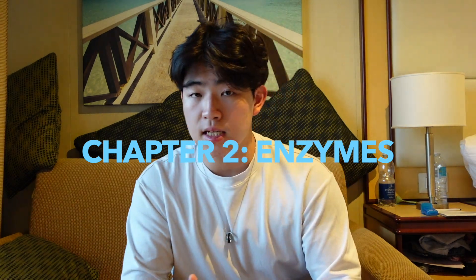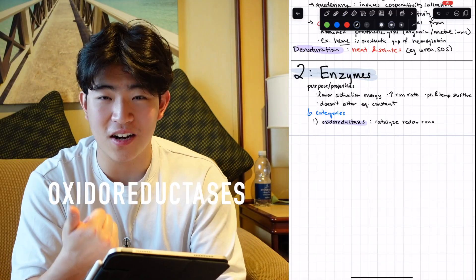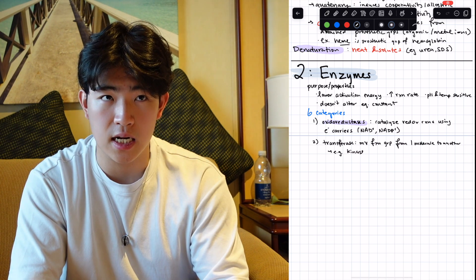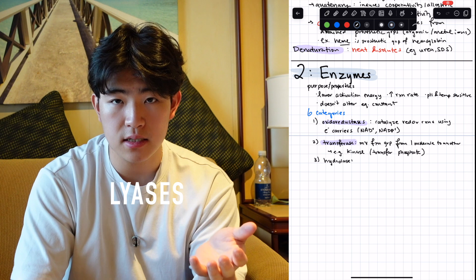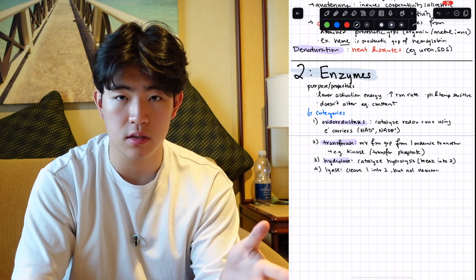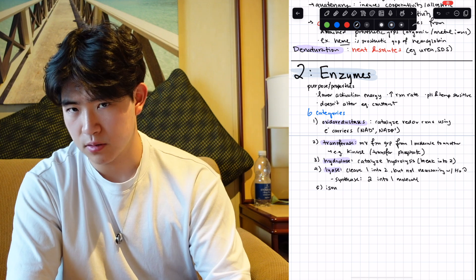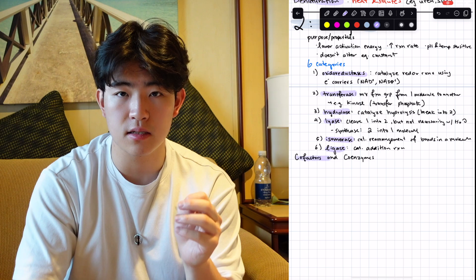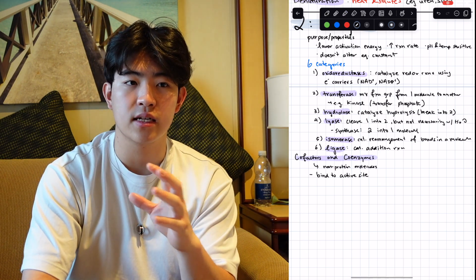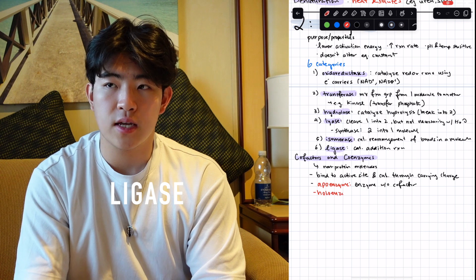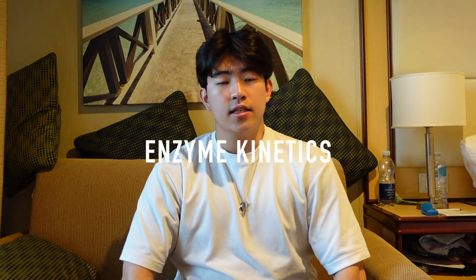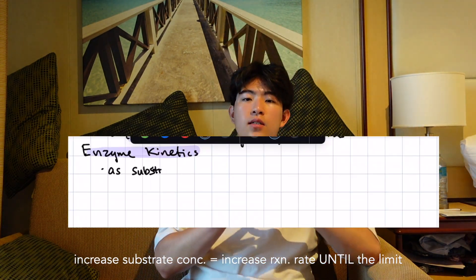Chapter two is enzymes. There are six categories: oxidoreductases, transferases, hydrolases (which catalyze hydrolysis), lyases (which cleave one molecule into two — or in reverse as a synthase, joining two into one), isomerases (which catalyze rearrangement of bonds within a molecule), and ligases (which stick things together).